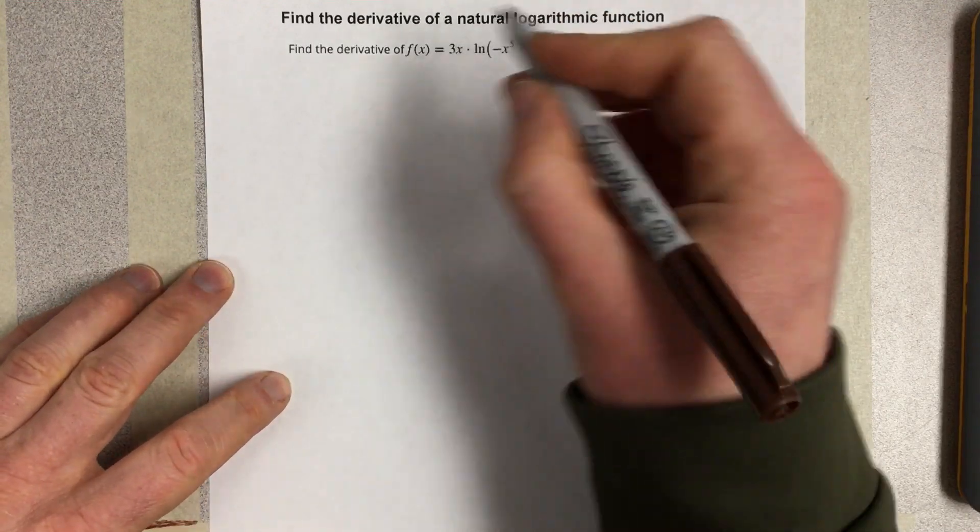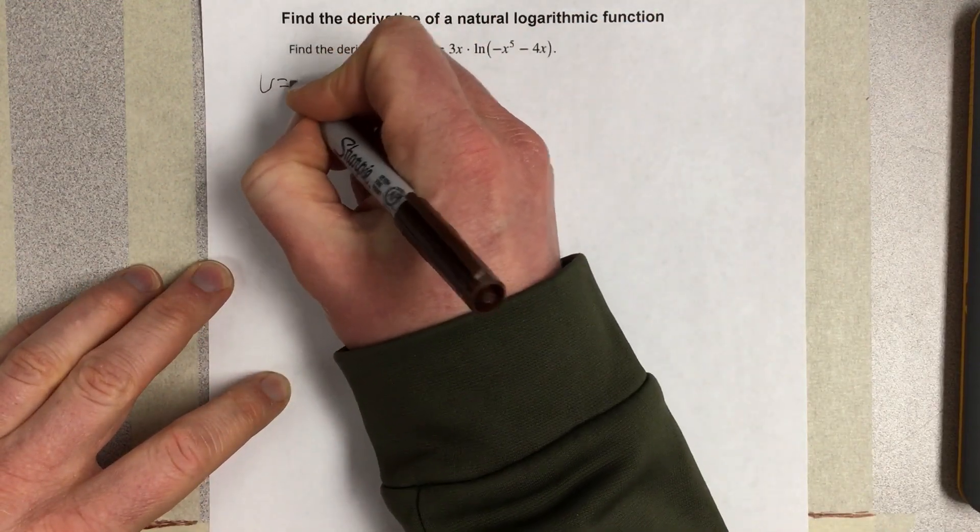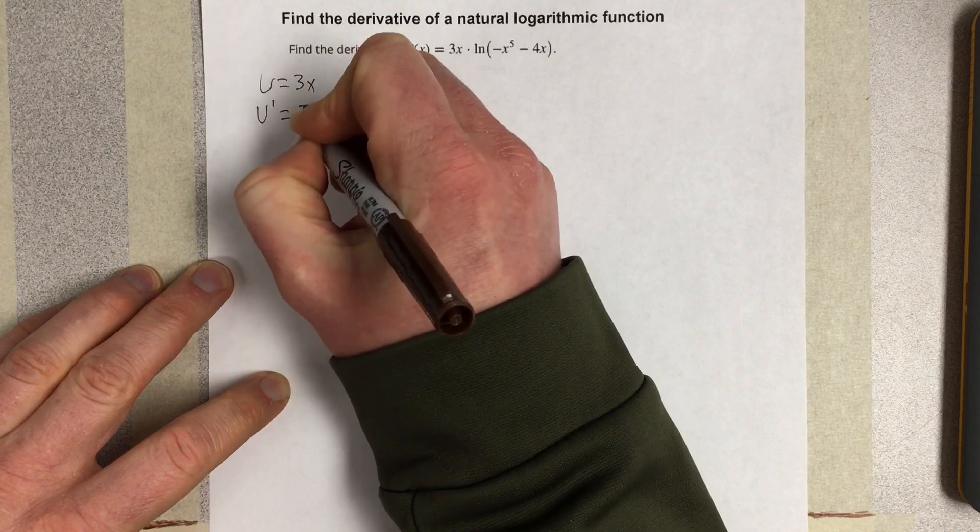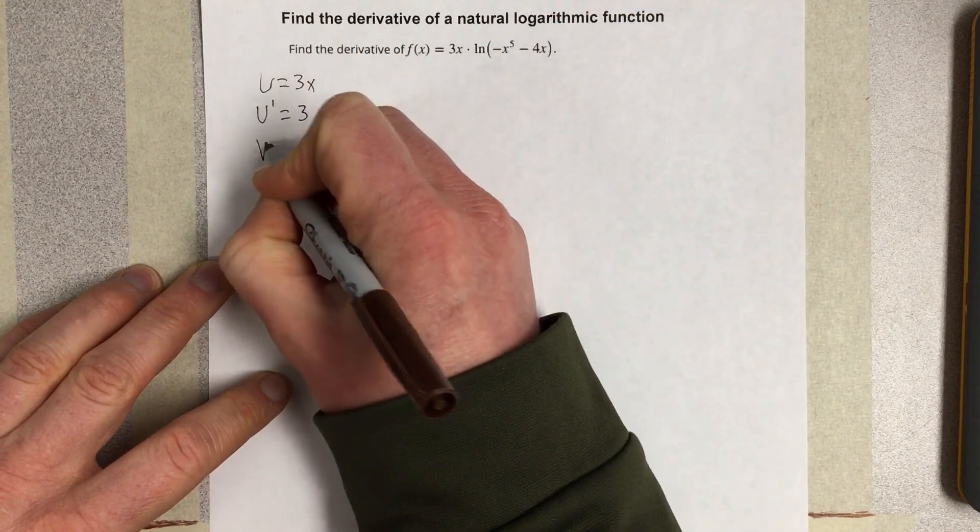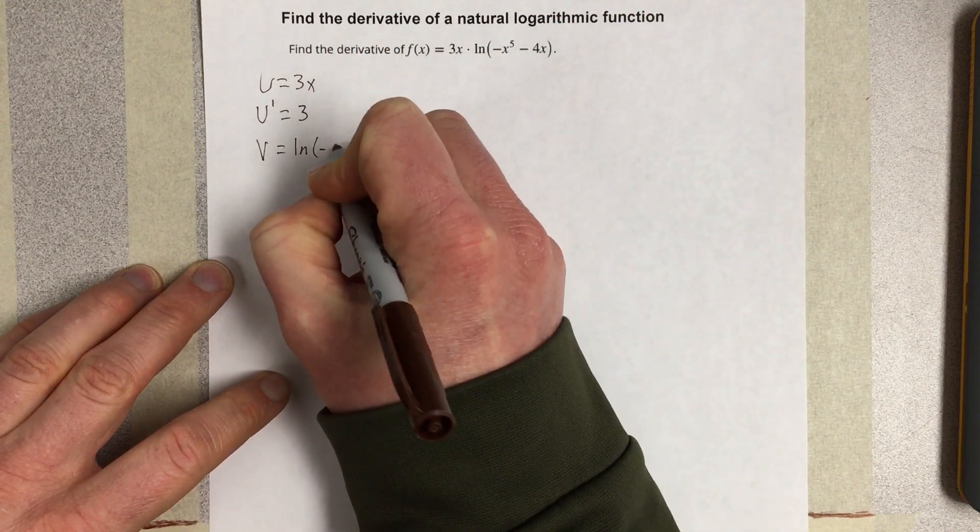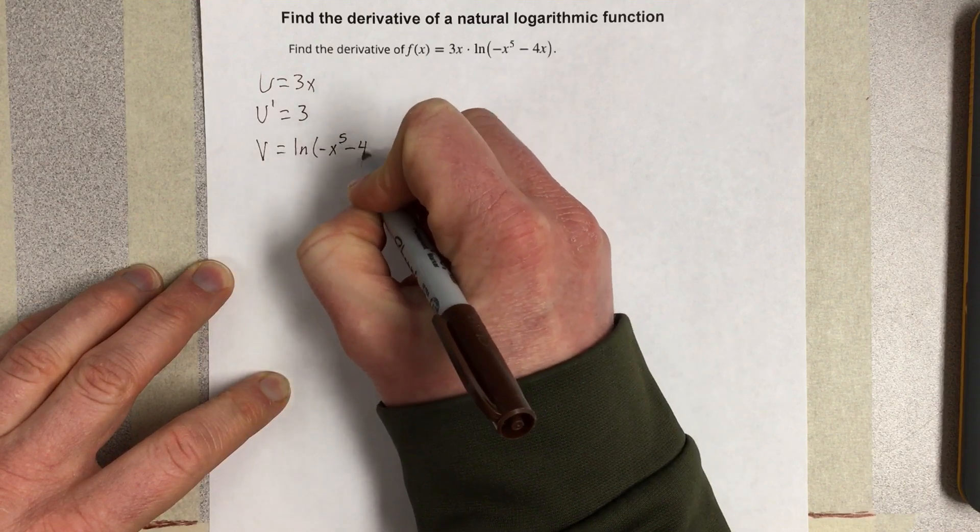You can see we have a product rule. So I'll start by saying u equals 3x, u prime is 3, and v is natural log of negative x to the 5th minus 4x.